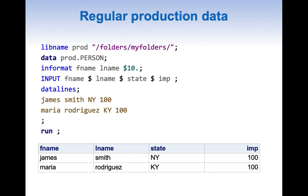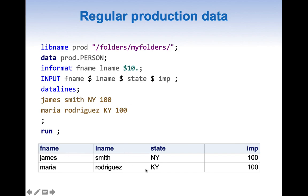Now let us look into our data. Our data has four columns: FNAME, LNAME, STATE, and IMP, with the values James, Smith, New York, and 100 for the first row. This is just to illustrate how our production data looks like. Once the input statement works it reads all our data very nicely and everything looks pretty clean here.